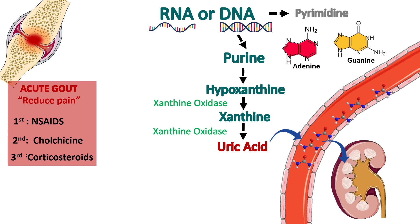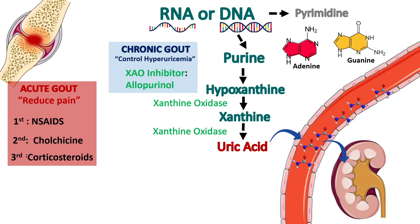After that, in the chronic phase, we focus on controlling the hyperuricemia. We have three classes of drugs for that. The first class is xanthine oxidase inhibitors, like allopurinol. Xanthine oxidase converts hypoxanthine to xanthine, and xanthine to uric acid. If we inhibit xanthine oxidase, it will reduce the production of uric acid.